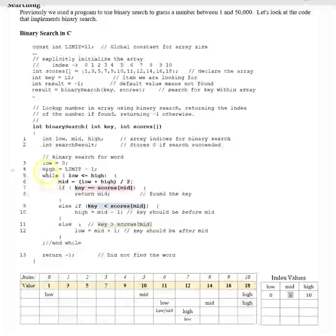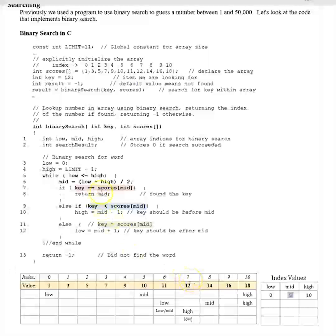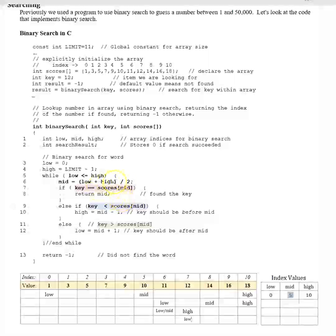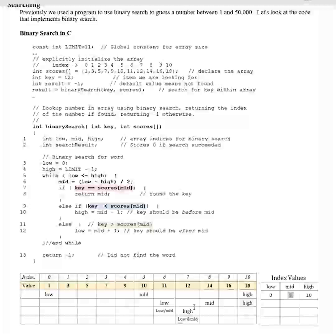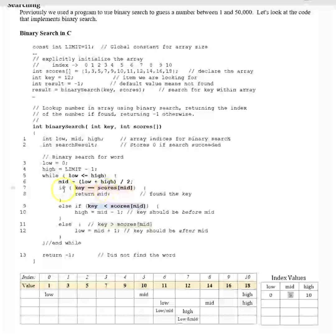We go back to the iteration. Is low (7) less than or equal to high (7)? Because of the equal comparison operator, that's true — 7 equals 7. So we compute 7 plus 7 equals 14, divided by 2 equals 7. Mid is now 7. We make the comparison: is 12 equal to scores[mid] which is 12? That's true. So we finally hit our first if condition and return mid, which is holding the index value of 7.